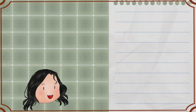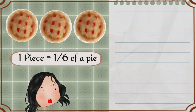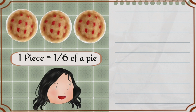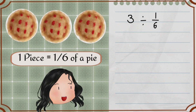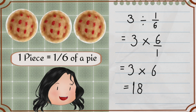Let's try a word problem. I have 3 pies. I cut them into a number of pieces. Each piece was 1 sixth of a pie. How many pieces did I cut the pies into? We just need to divide 3 by 1 over 6. Change it into multiplication, so 3 times 6 equals 18. I cut the pies into 18 pieces.